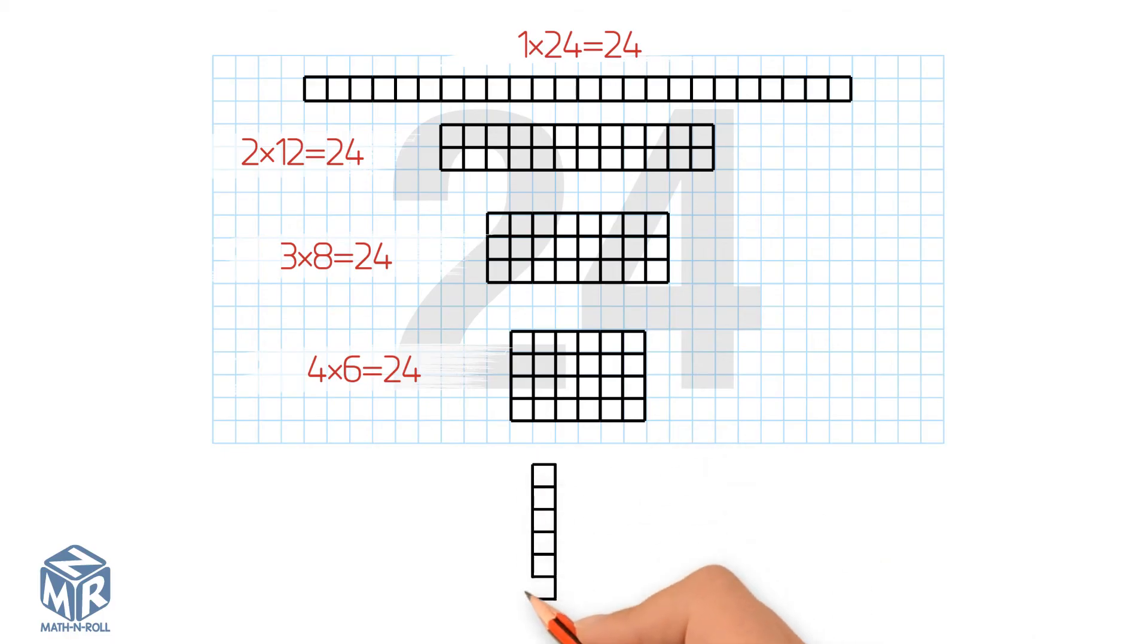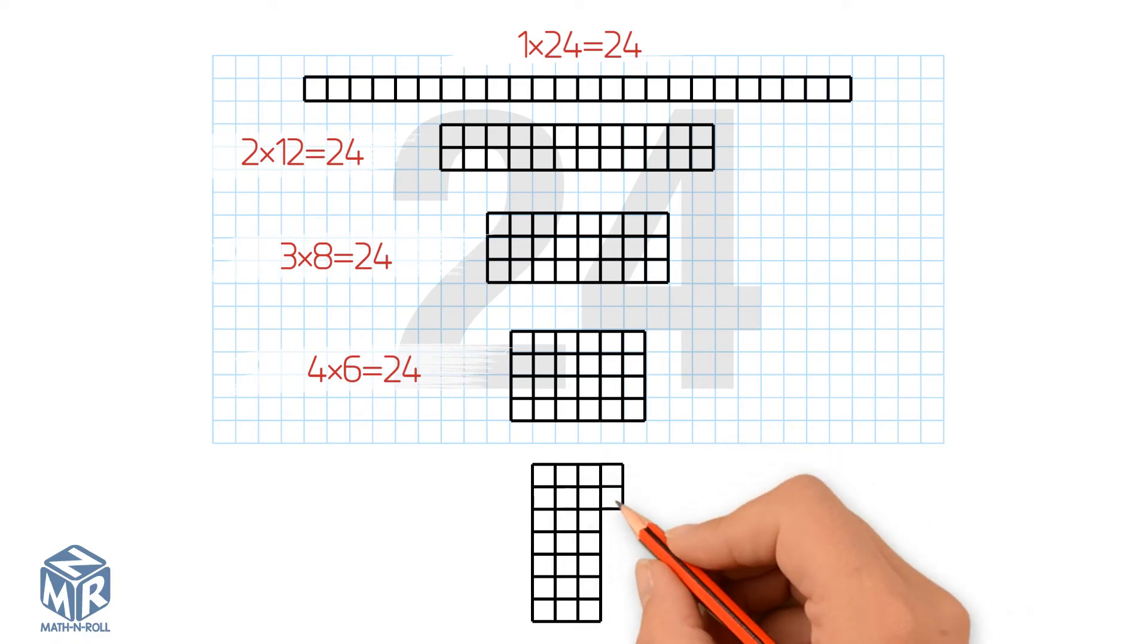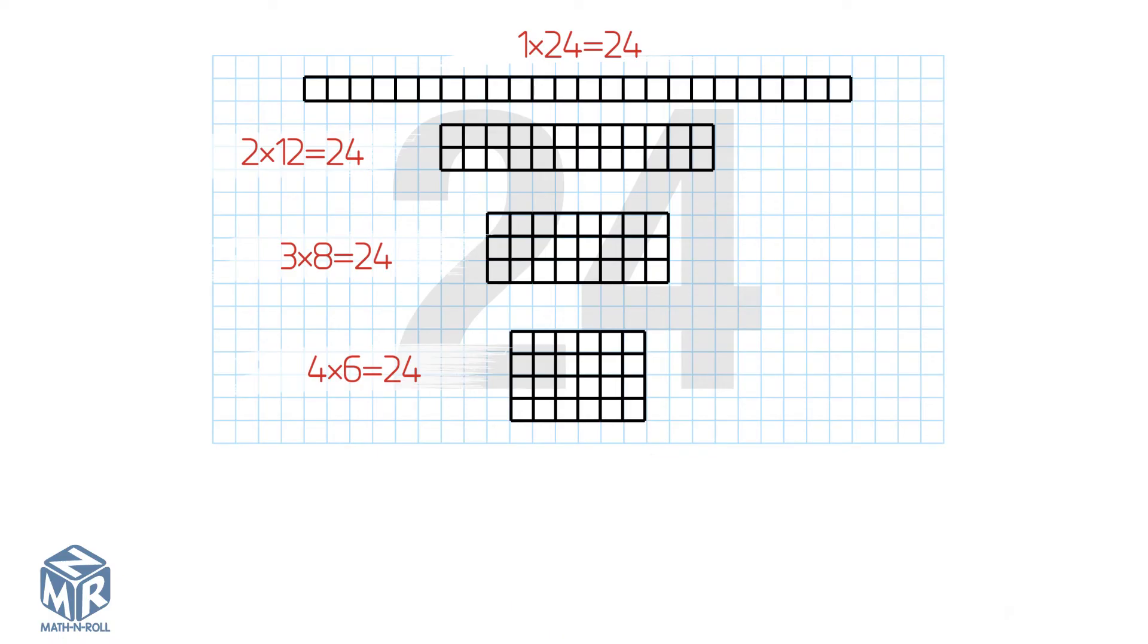Let's try 7 rows. We can't divide 24 by 7 without a remainder. So 7 is not a factor of 24. We're not going to try 8 because it's going to be the same factor pair as 3 times 8.